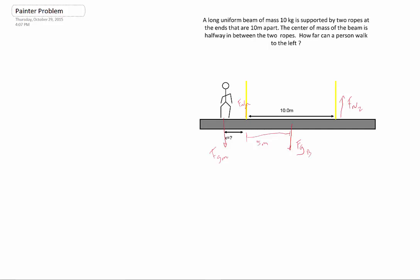So we're asked how far a person can walk to the left before this thing basically flips over and tips, basically, the guy off of the board. We talked a little bit about this in class, but one of the things that you're going to notice as you're looking across here, what happens, how do we know when this thing is going to start to tip?